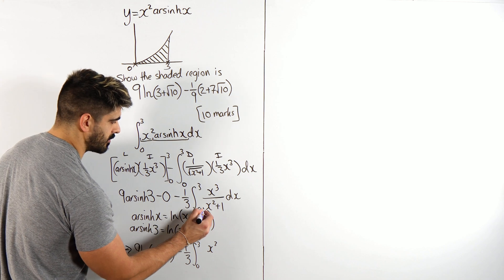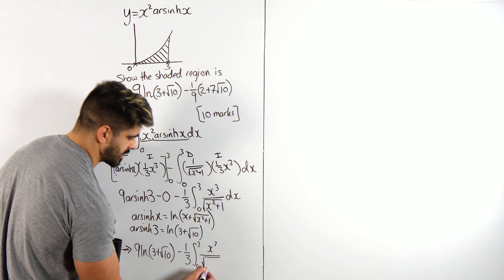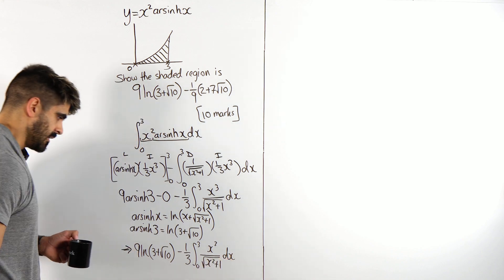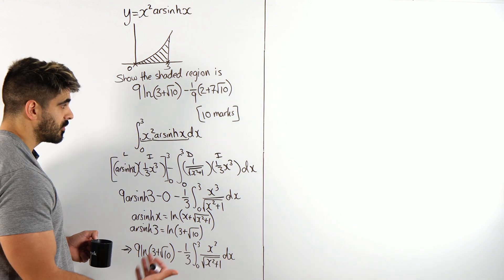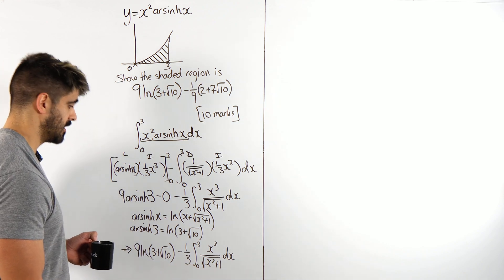So, we have 9 ln 3 plus root 10 minus a third integral between 0 and 3 of X cubed. And also, I've forgotten the root around that, right? X cubed over the root of X squared plus 1 dx. So, it's up to us, or up to me, to find this integral and then we'll put it back in with the third.